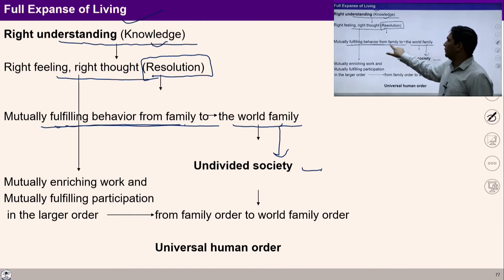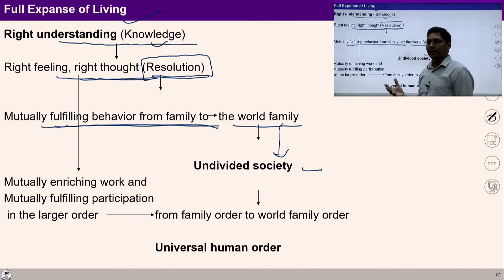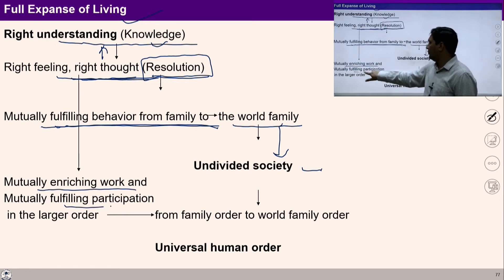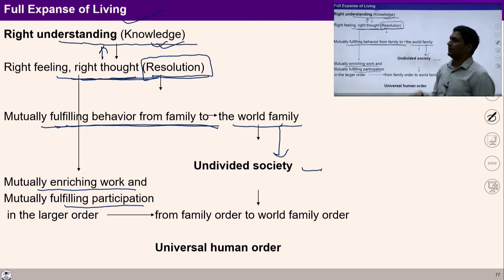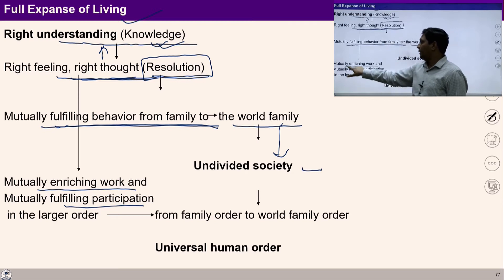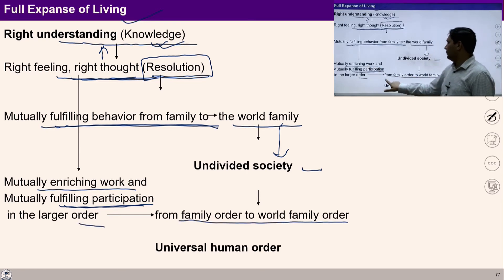For undivided society I should be living in a mutually fulfilling manner from family to world family order. This is possible when I have right understanding, right feeling, and right thought — that is resolution. With right feeling and right thought, I am able to ensure mutually enriching work and mutually fulfilling participation in the larger order. With the knowledge and right understanding I am able to see co-existence with every unit, and once I ensure this participation from family to world family order, we will achieve universal human order.